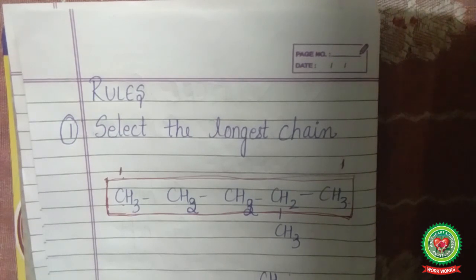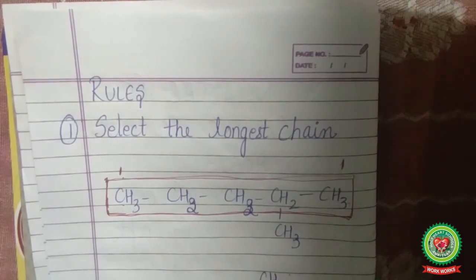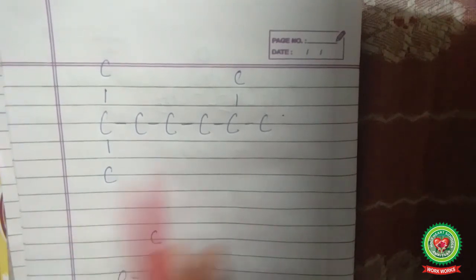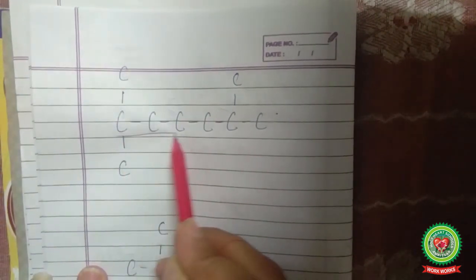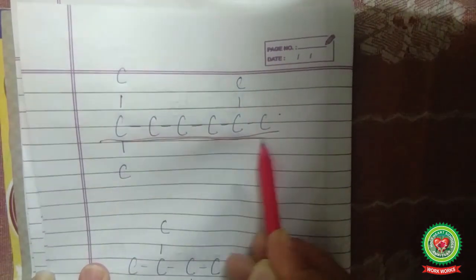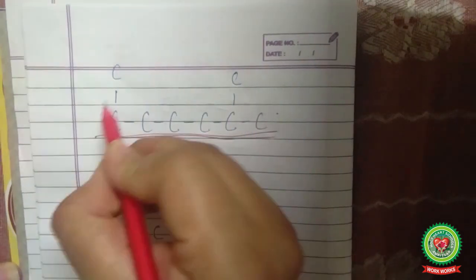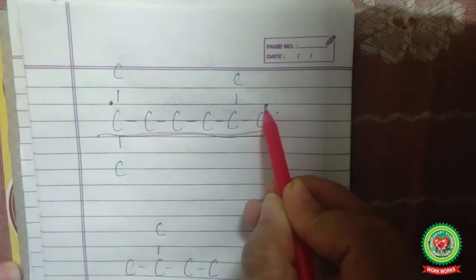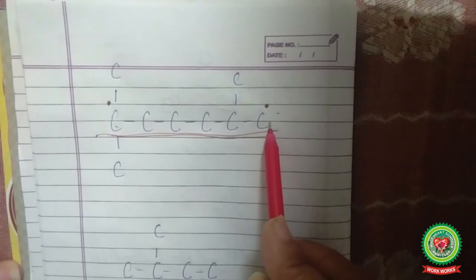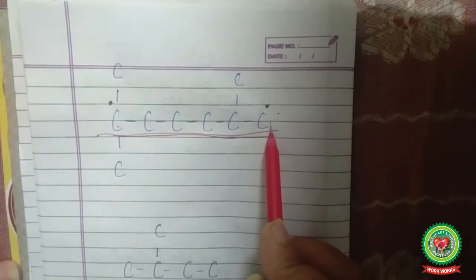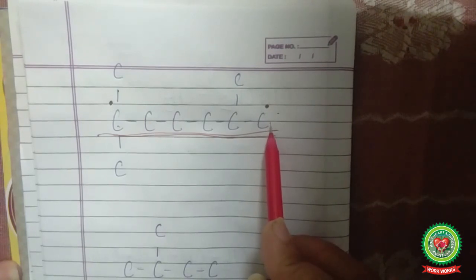Now we proceed with the rules for naming organic compounds. The first rule is to select the longest chain, meaning we select the basic chain which tells us the word root of the organic compound. Here I have drawn some skeletons — basic structures with no functional groups. When you get any structure, you must identify the straight chain. This is my straight chain; mark the first and last carbon.